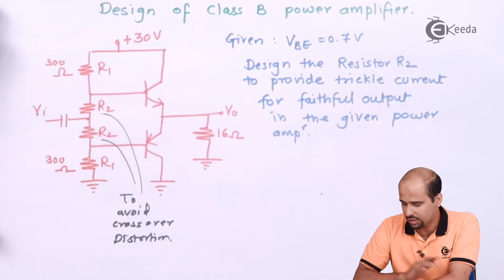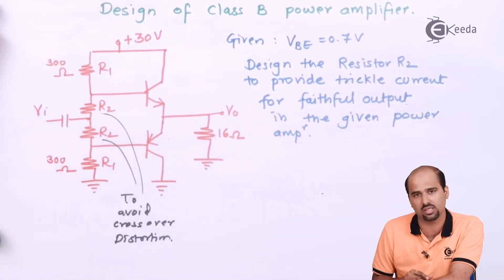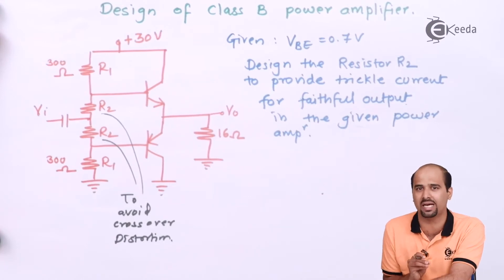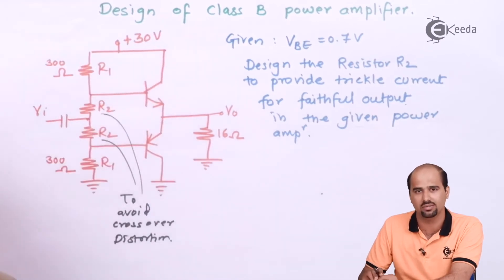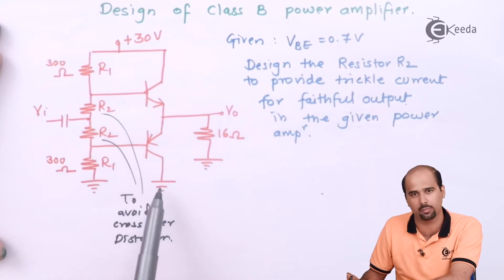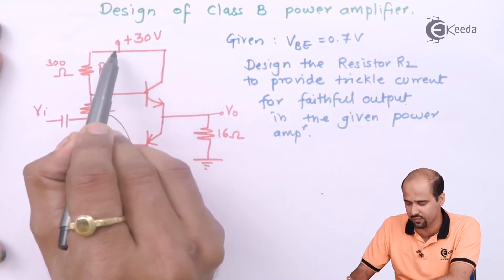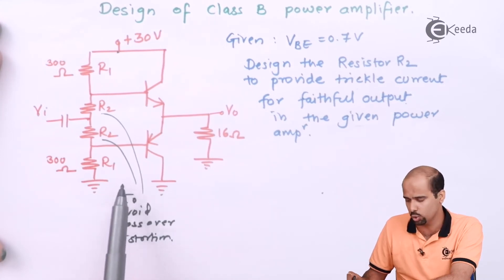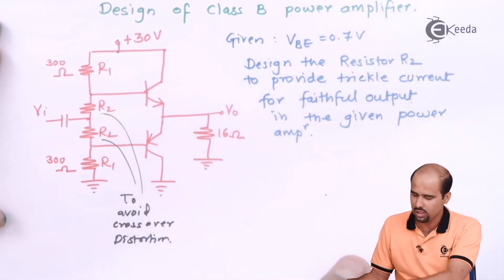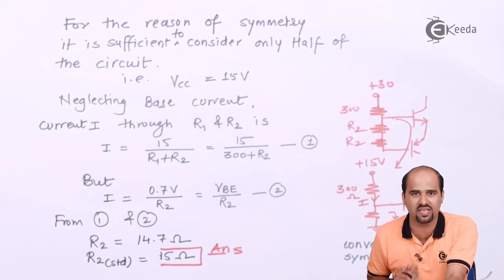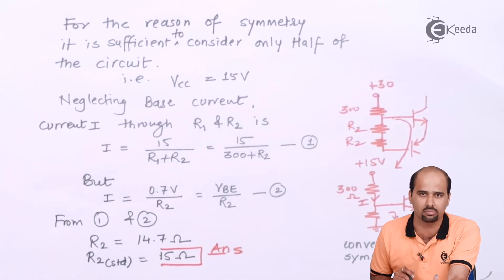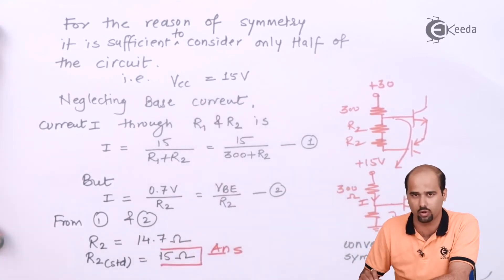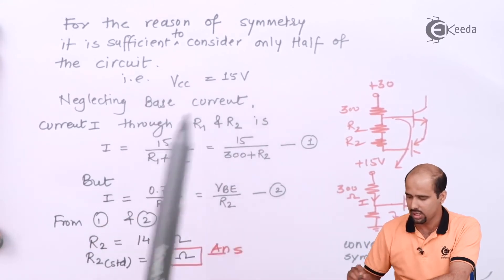What I will do is cut the circuit into two pieces, such that one transistor gives one part and another transistor gives another part. In this case, 30 volts is distributed: 15 volts is given to the upper part and minus 15 volts to the collector of the PNP transistor. So cutting this circuit into two pieces means that if I consider only the upper part, then VCC is equal to 15 volts.